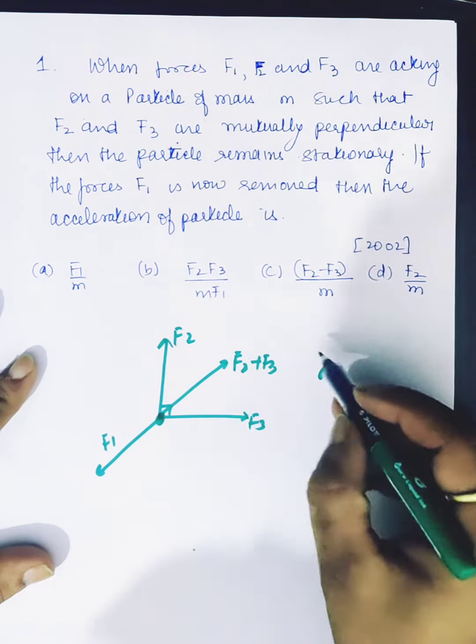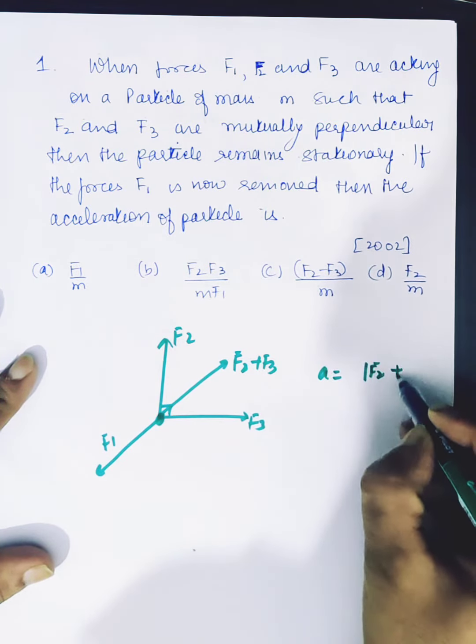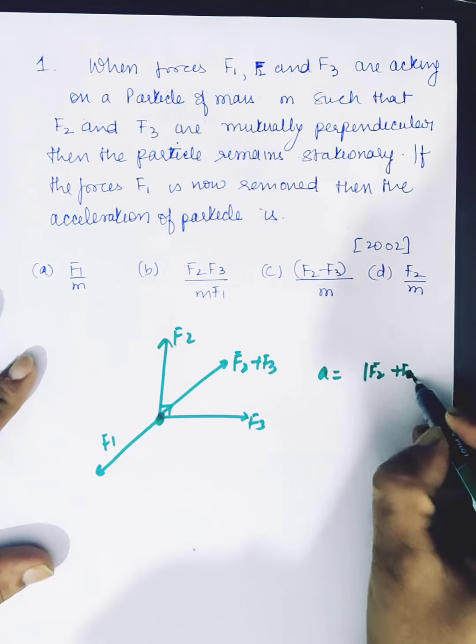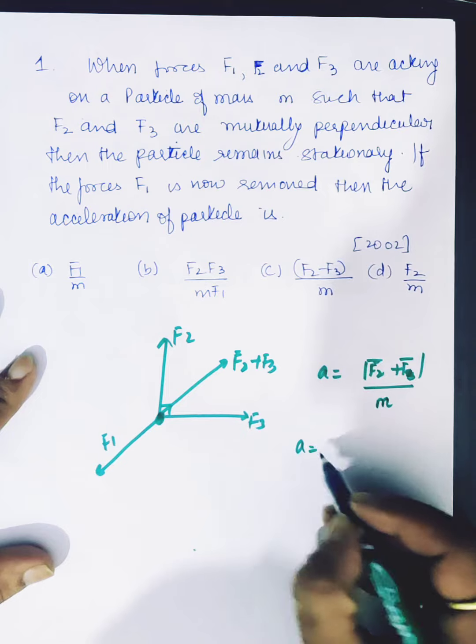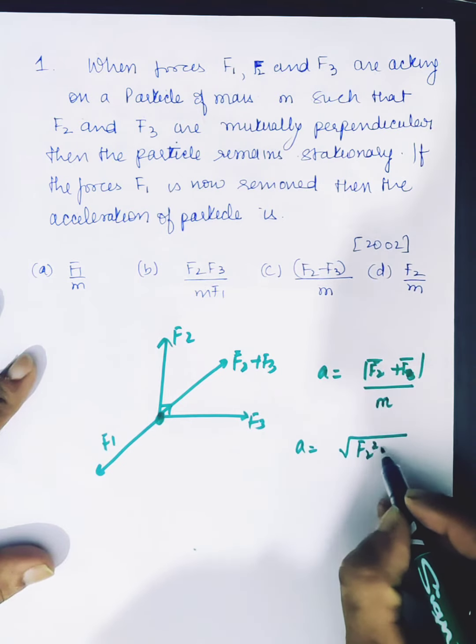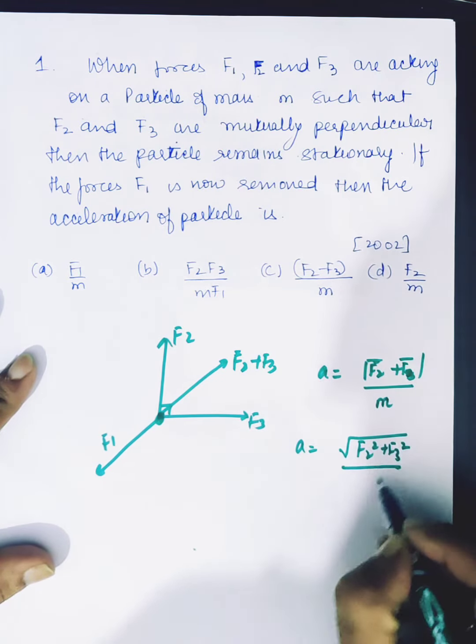So acceleration will be magnitude of F2 plus F3 divided by M. And we can also write F2 square plus F3 square divided by M.